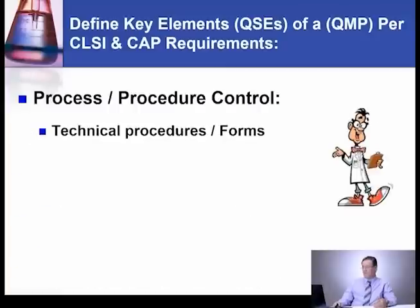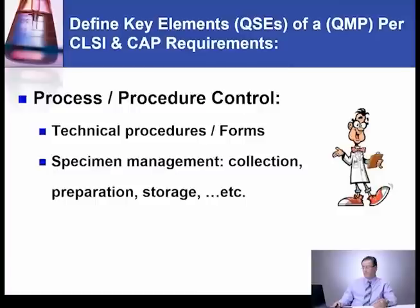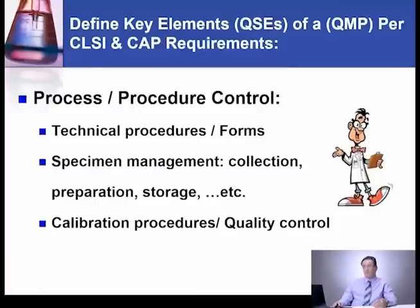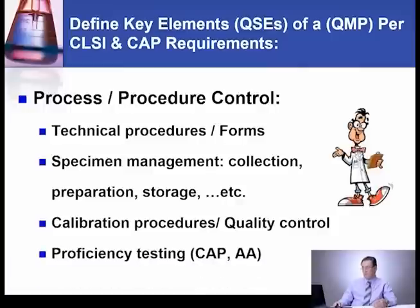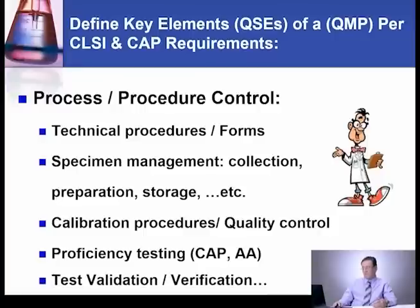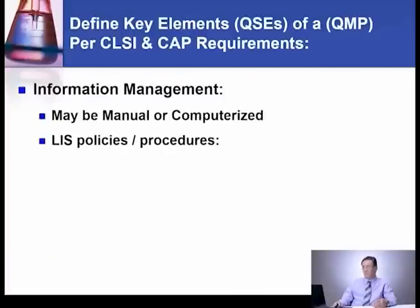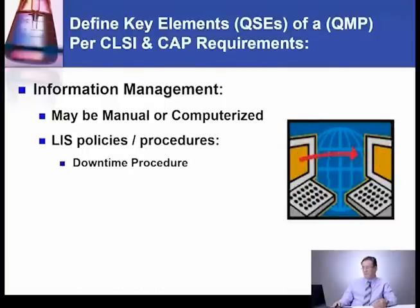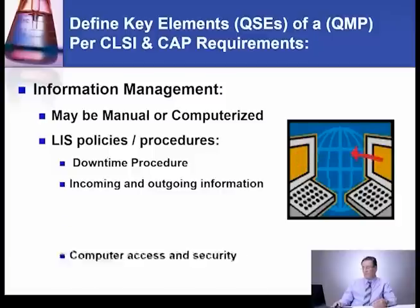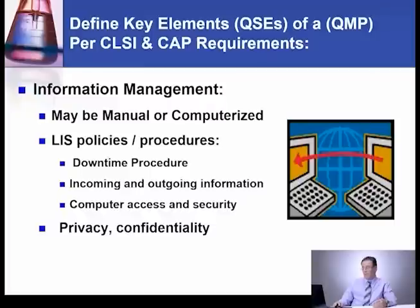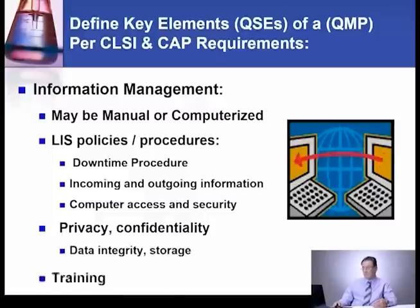Under Process/Procedure Control, you need technical procedures, forms, specimen management, and discussion of collection, preparation, storage, calibration procedures, quality control, proficiency testing, test validation, and verification. Under Information Management, it may be manual or computerized. You need LIS policy and procedures such as downtime procedures, incoming and outgoing information, computer access and security, privacy and confidentiality, data integrity and storage, and a training checklist for your LIS system.